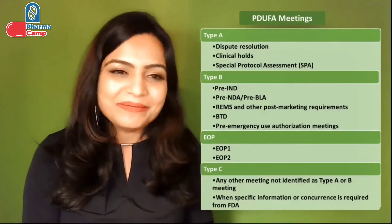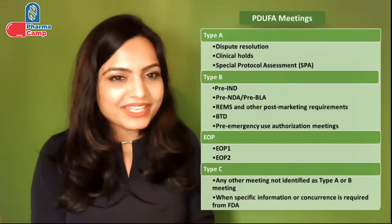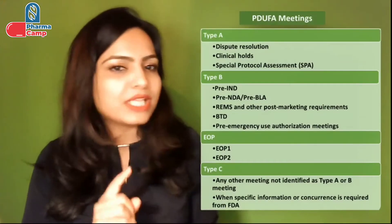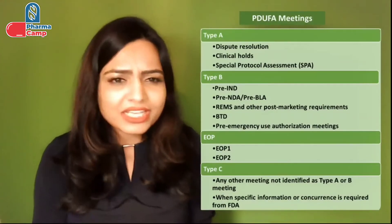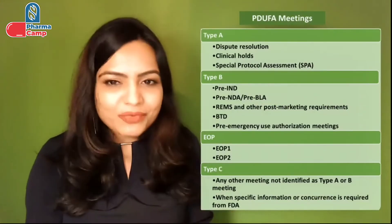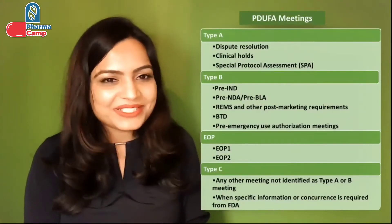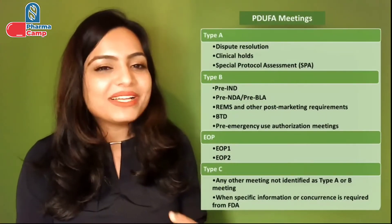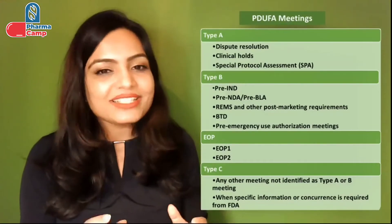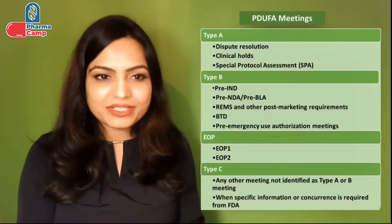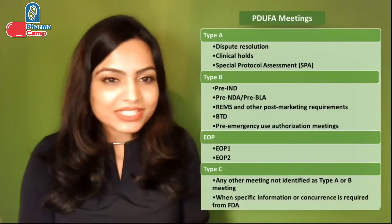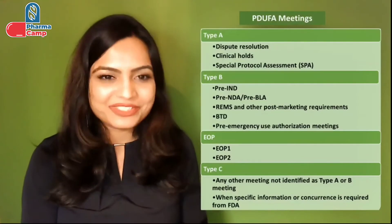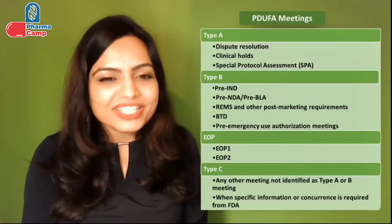Now let's come to the next category — Type B meetings. The purpose of Type B meetings is that you can discuss with FDA before submitting any application, for example an IND application, NDA, or BLA application. You can also discuss post-approval related topics such as Risk Evaluation and Mitigation Strategy (REMS), Breakthrough Designation, or Emergency Use Authorization. I will cover these concepts individually in future videos.